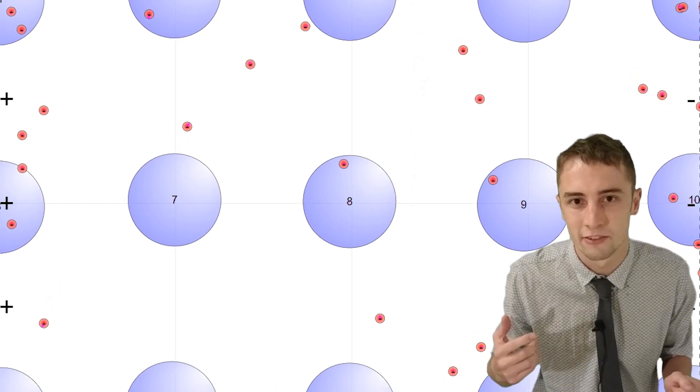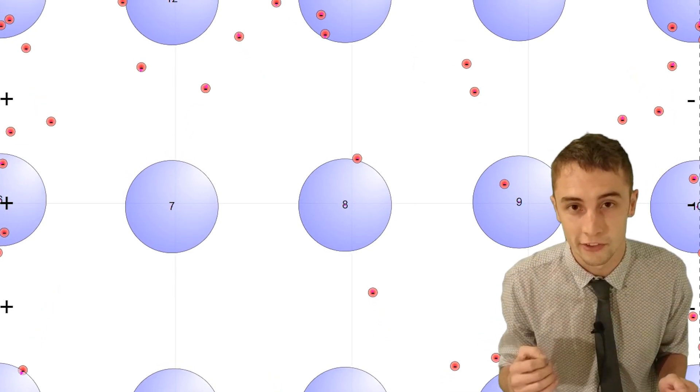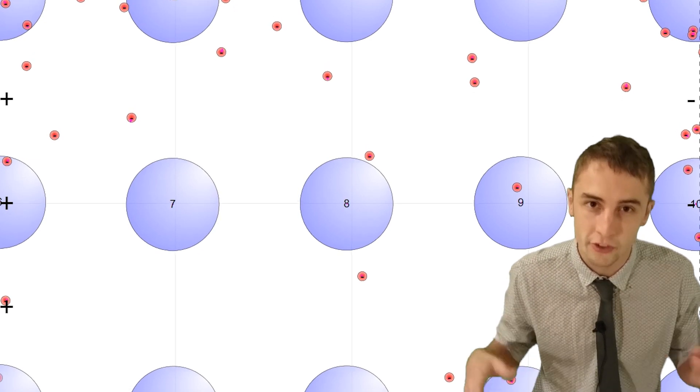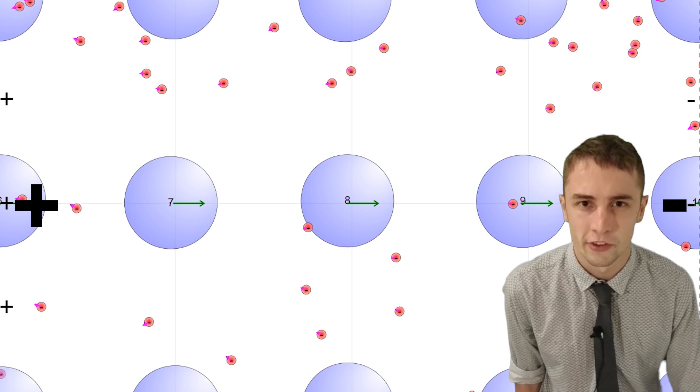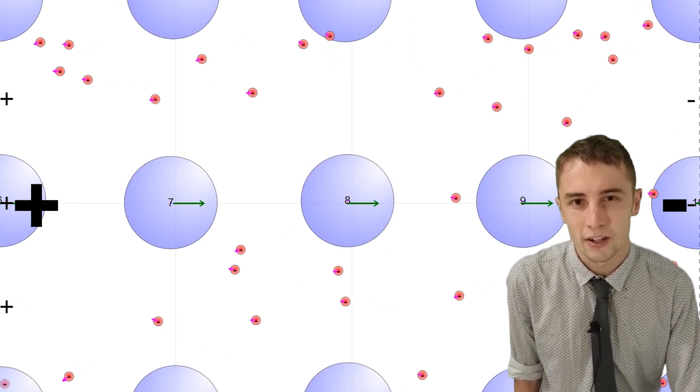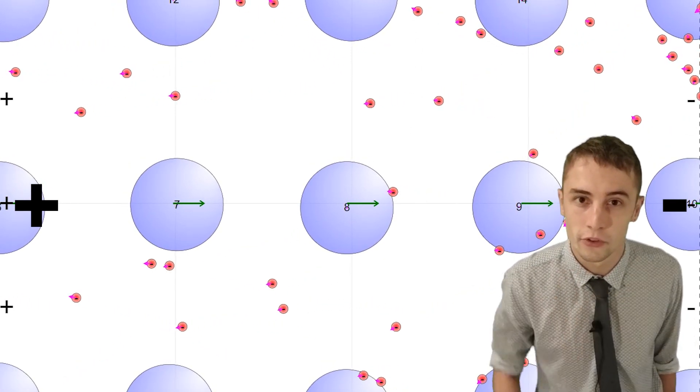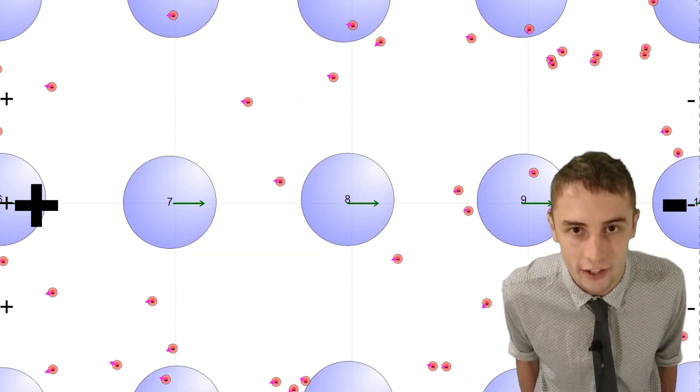So the electrons are actually going to have zero velocity on average if you summed up the velocity of all of these electrons. Now if we do apply a potential difference across this wire, then these electrons are going to want to drift towards the positive end of the supply just because they've got a negative charge.